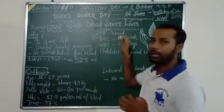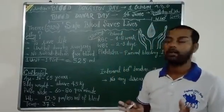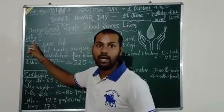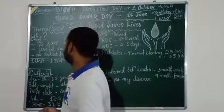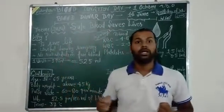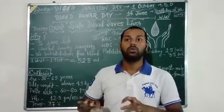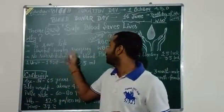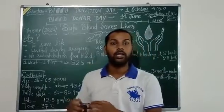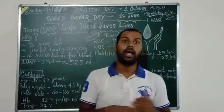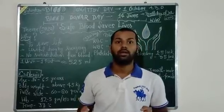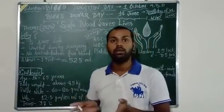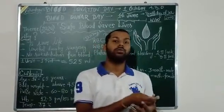We donate safe blood to save the lives of people. Why should we donate blood? To save lives. Blood donated by us is useful during surgery, kidney transplant, liver transplant, and accidents where blood is required. The blood we donate is stored in the blood bank, and patients can take it from there.